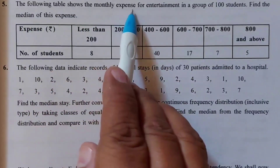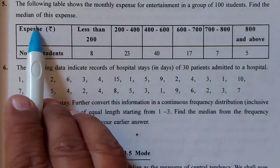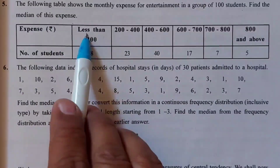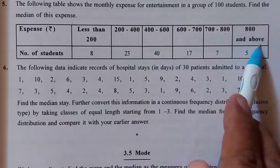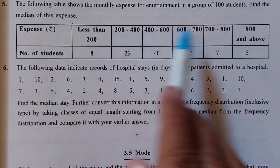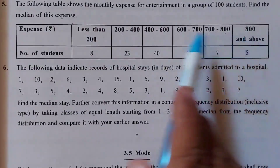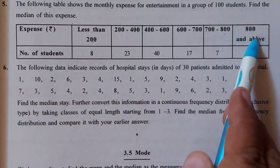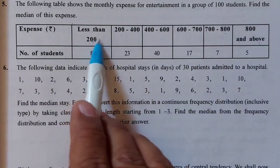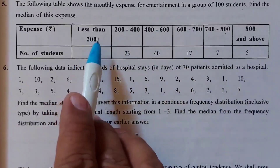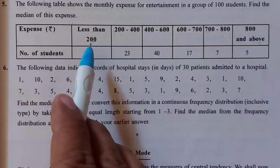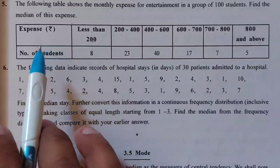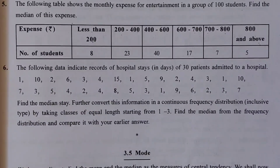Now sum number 5 from exercise 3.4: the following table shows monthly expenses on entertainment in a group of 100 students — find the median. The classes are: less than 200, 200–400, 400–600, 600–700, 700–800, and 800 and above. This is an open-ended class distribution — no lower limit for the first class and no upper limit for the last. For open-ended classes, the method for finding median, quartile, etc. does not change.